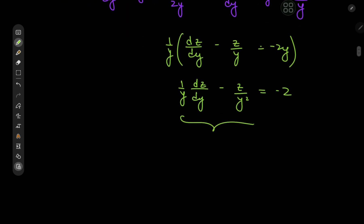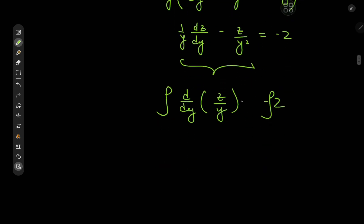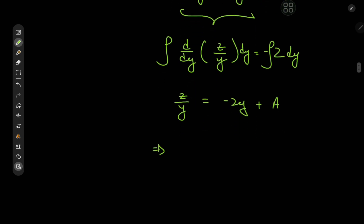Now notice that the left-hand side is the derivative of a product — it's the derivative with respect to y of z/y. This equals negative 2, so we integrate with respect to y, and that means we have z/y equal to negative 2y plus a constant of integration a. Multiplying by y gives z equal to ay minus 2y².